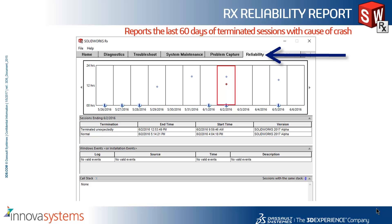A new tab within the 2017 release is the Reliability tab. The Reliability tab gives us information over the last 60 days of how the SOLIDWORKS session has ended. We can see if the SOLIDWORKS session has ended normally or terminated unexpectedly, i.e. crashed.